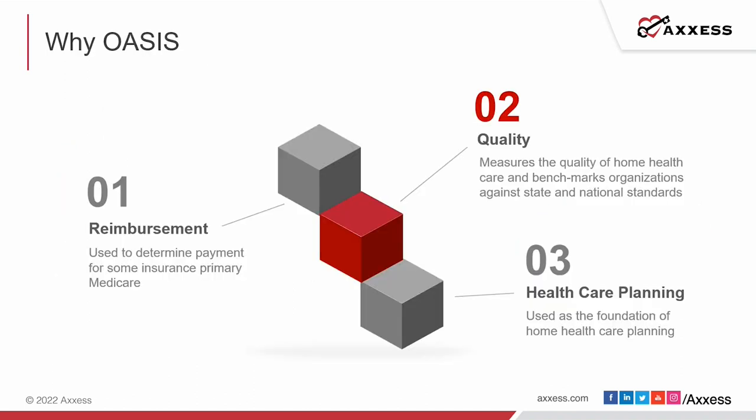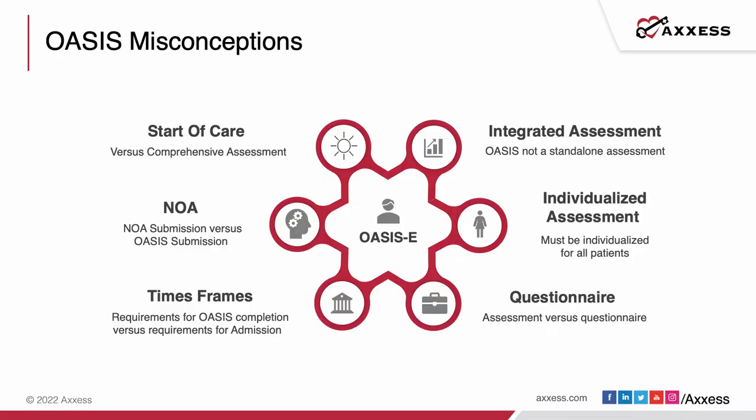Why OASIS? First, it determines reimbursement — depending on how we answer some data elements, we are eligible for a certain amount of payment. It also determines quality, measuring the quality of home care using the data elements we select for the agency. And it helps with healthcare planning overall, serving as a foundation for all of our home care patients and agencies in general.